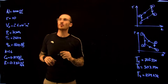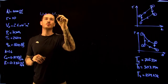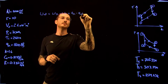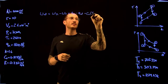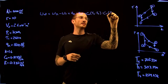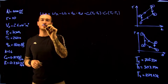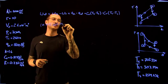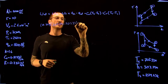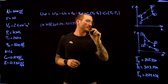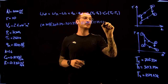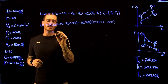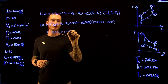Now that we have all temperatures, we solve for work net. Work net = CV(T3 − T2) − CV(T4 − T1) = 0.717 × (3,213.79 − 703.33) − 0.717 × (1,279.43 − 280) = 1,083.41 kJ/kg.